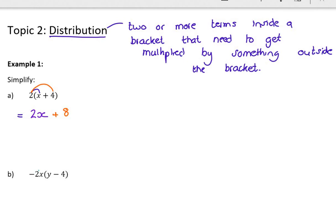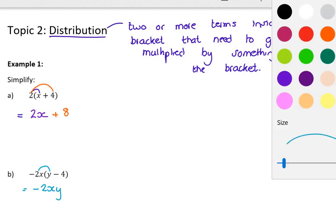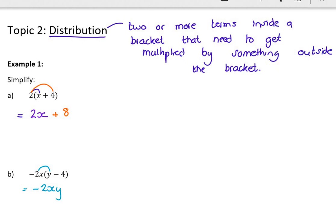Minus 2x gets multiplied by y, so that's minus 2xy. You're multiplying, so you don't have to worry about like terms. You just multiply signs, numbers, variables. A negative times a negative is a positive. 2 times 4 is 8, and x times no other letters just leaves me with x. Those aren't like terms so I can't add them.